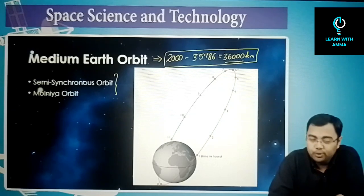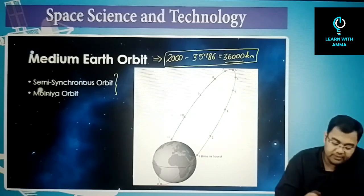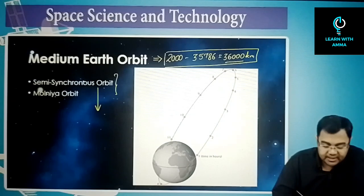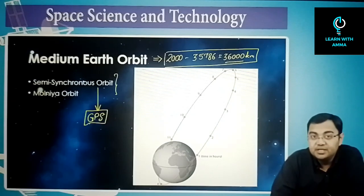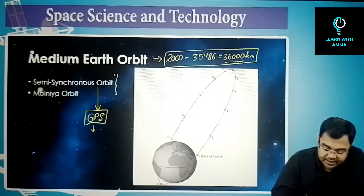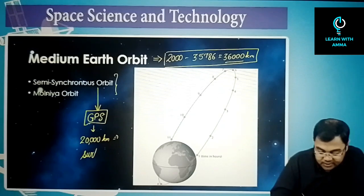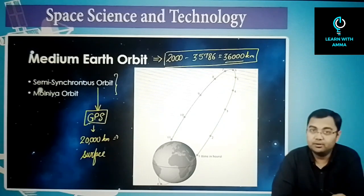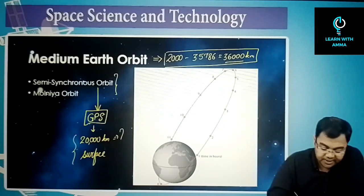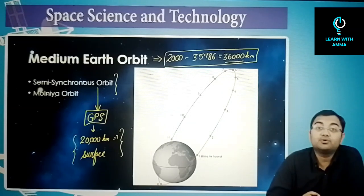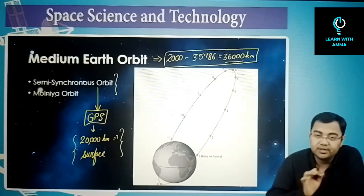The first is the semi-synchronous orbit, used for GPS purposes, located at approximately 20,000 kilometers from the surface of the earth — not from the center. This orbit is called semi-synchronous because it has a revolution period of 12 hours.